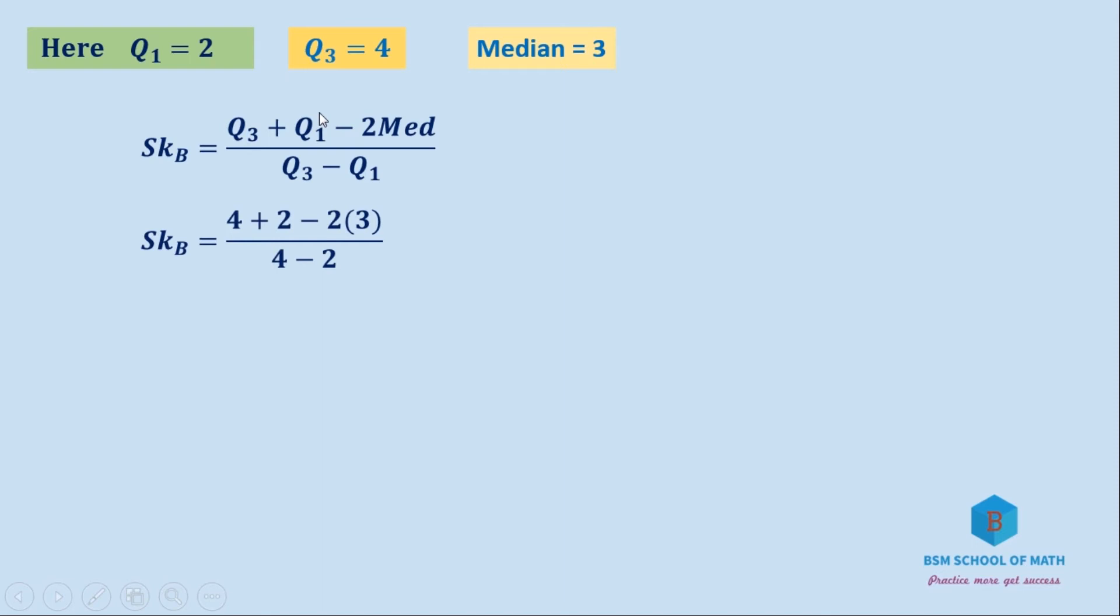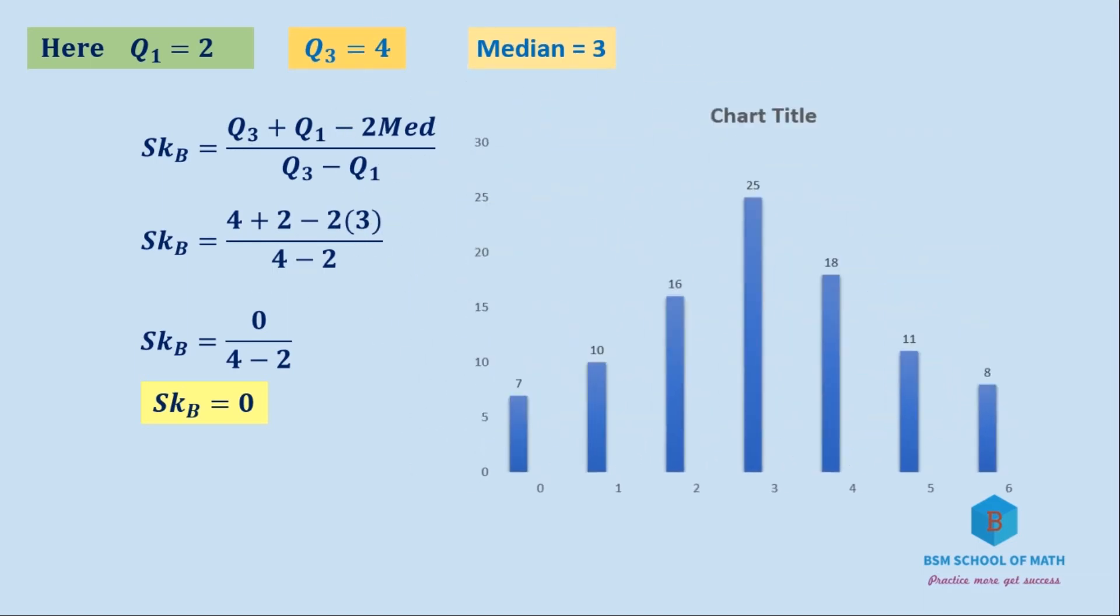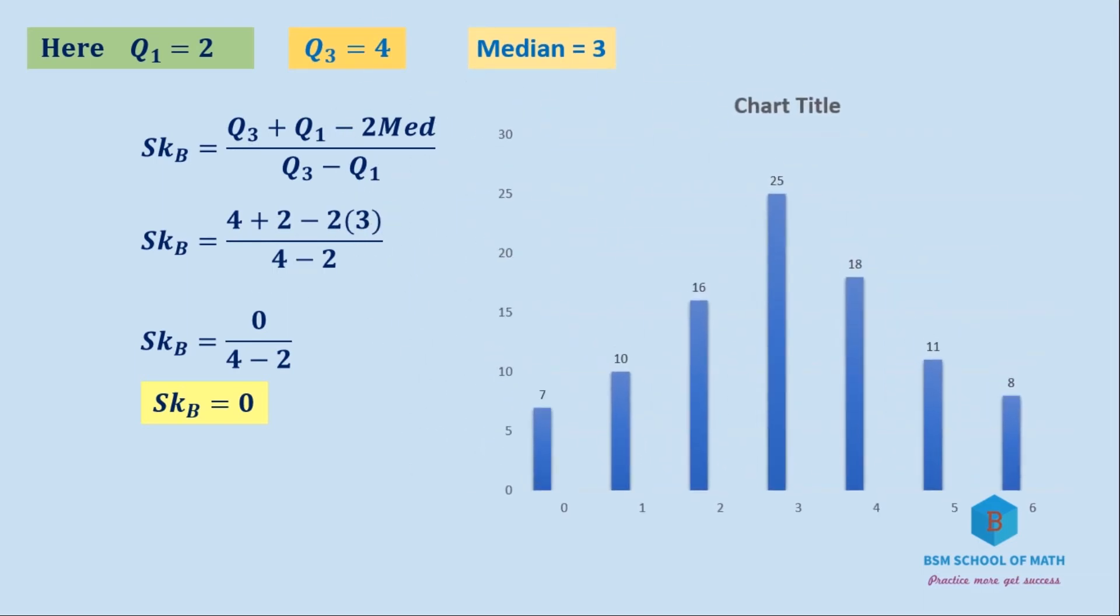SK_B = (4 + 2 - 2(3))/(4 - 2) = (4 + 2 - 6)/2 = 0/2 = 0. Since the coefficient equals zero, the data is equal on the left and right. So there is no skew, this is symmetrical.